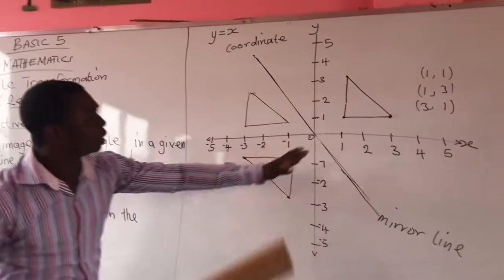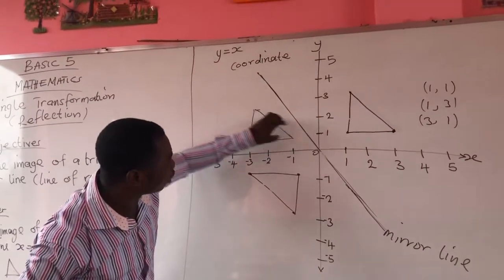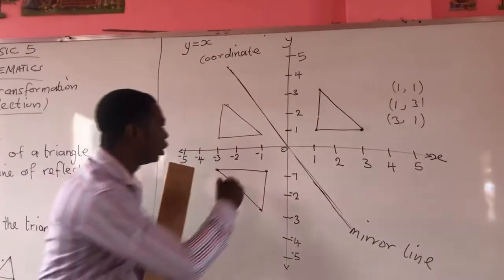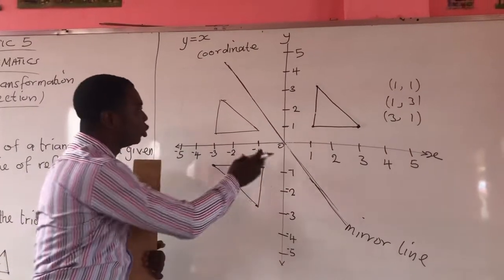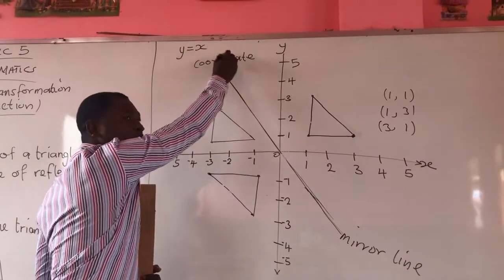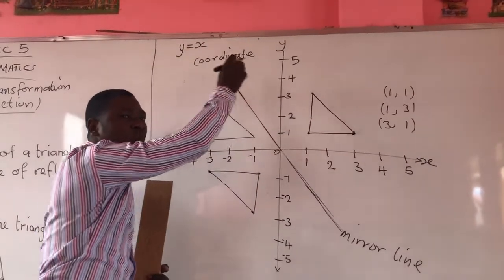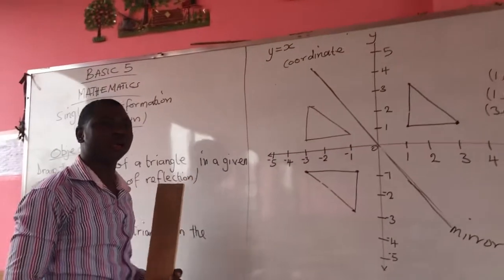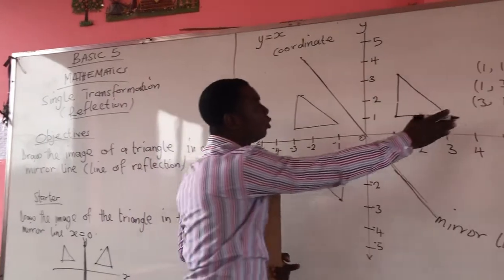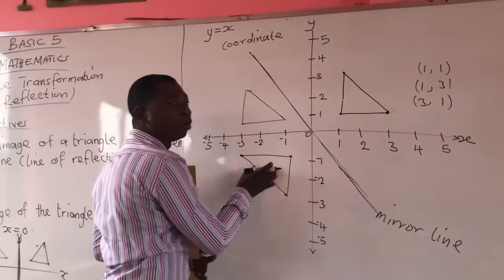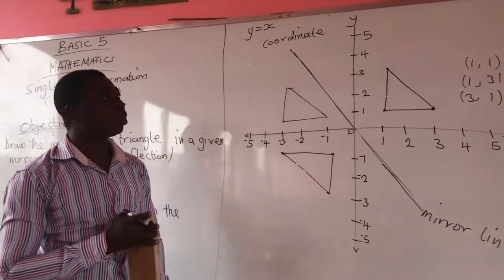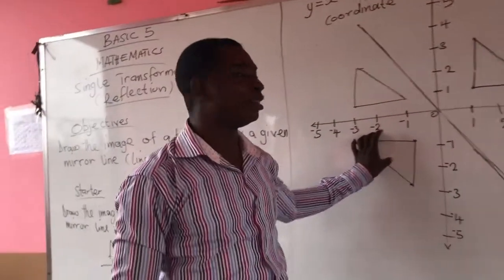We can also transform this image from here using the mirror line. When transforming, the line is y equal to x, which can also be written as x equal to y. That means we can calculate for y and we can calculate for x.